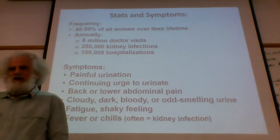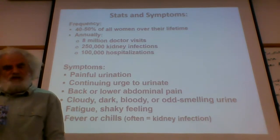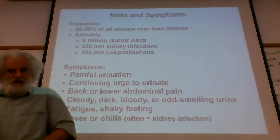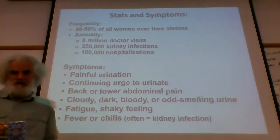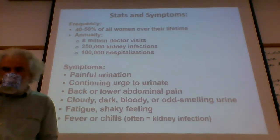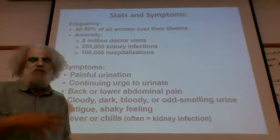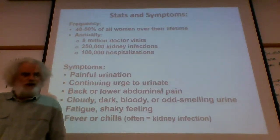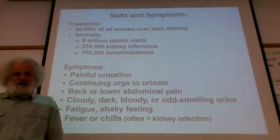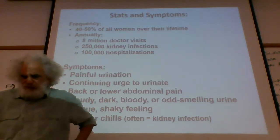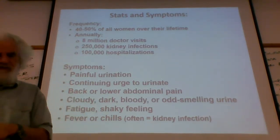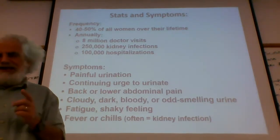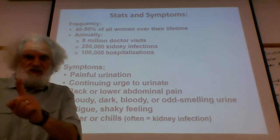Probably half of all women will end up having urinary tract infections over their lifetime, resulting in a lot of doctor visits. If left untreated, the infection can make its way up from the bladder into the ureter and then up into the kidney — obviously a much more serious infection resulting in hospitalization. Symptoms include painful urination, a constant urge to pee, and lower backache. Bacteria in the urine and fevers and chills are bad signs that the infection has reached the kidney — see your doctor and get on antibiotics right away.